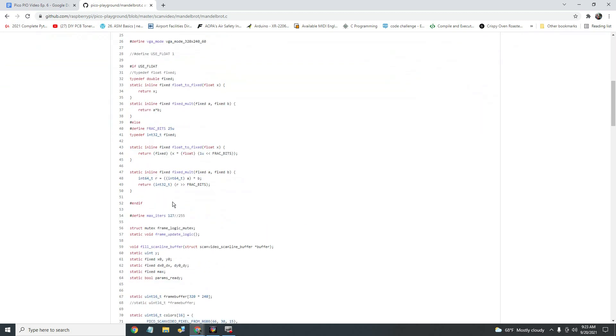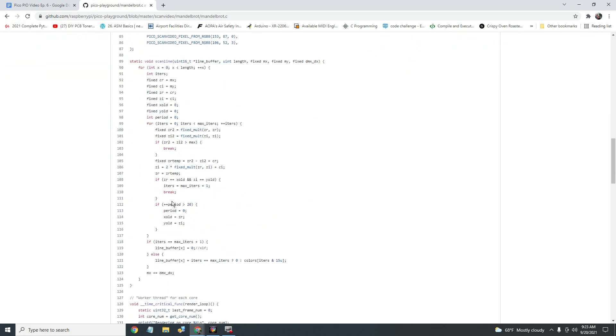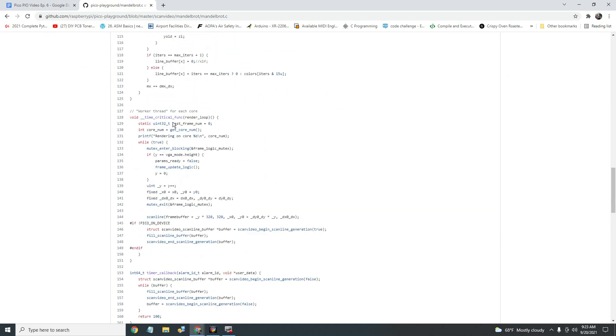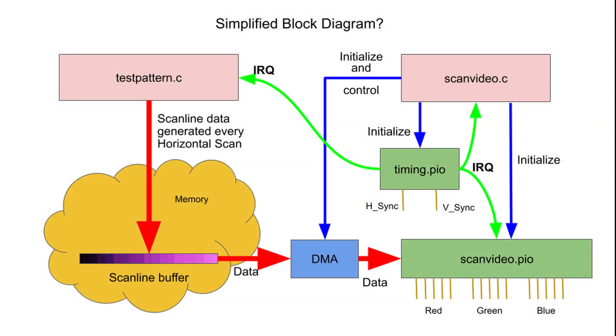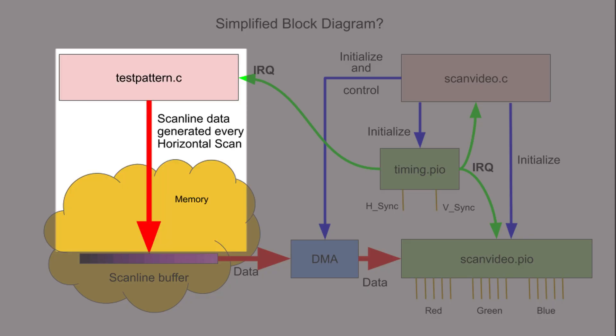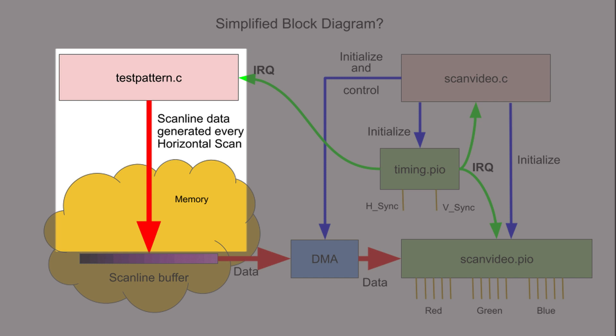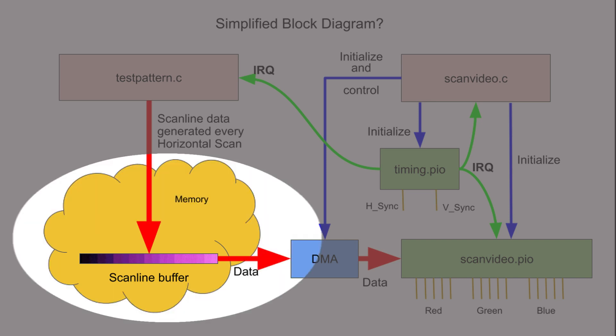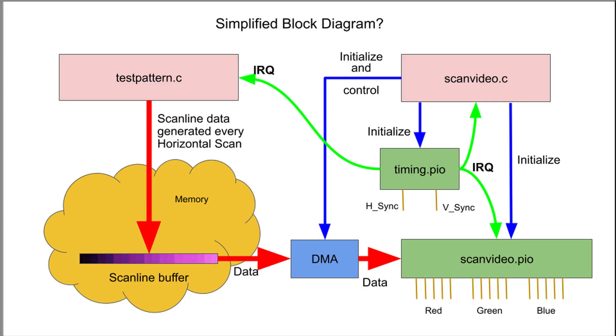How does it work? Well, I'm still trying to wrap my head around it. Some really smart people at Raspberry Pi programmed their butts off and made every little bit of code count. The scan video routines provided by Raspberry Pi rely on the RP2040 generating the graphic data for each horizontal line each and every time the line is drawn, roughly 31,500 times per second. There are scanline buffers, but in most cases there are no frame buffers, primarily because there isn't much memory on board the RP2040. However, I believe the Mandelbrot demo does use a framebuffer to support dual-core operation.